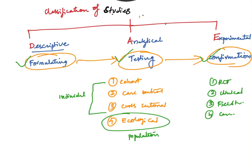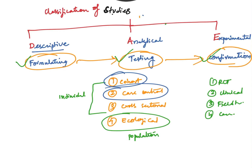In modern exams, they give a scenario and ask which study is being described, or which study is best suited for a particular situation. Among all study types, most of you will be more familiar with case control and cohort studies. Experimental studies are also commonly asked, but most questions revolve around cohort, case control, and experimental studies, and you may get confused about which to choose.